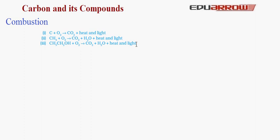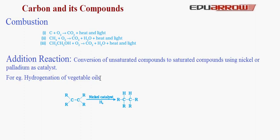Now let us understand what is addition reaction. Conversion of unsaturated compounds to saturated compounds using nickel or palladium as catalyst is known as addition reaction. A catalyst is a substance which changes the rate of reaction without itself being consumed. For example, hydrogenation of vegetable oils: the double bond between carbon atoms is converted to a single bond using nickel catalyst and hydrogen is added. Since hydrogen is added, this reaction is known as addition reaction.